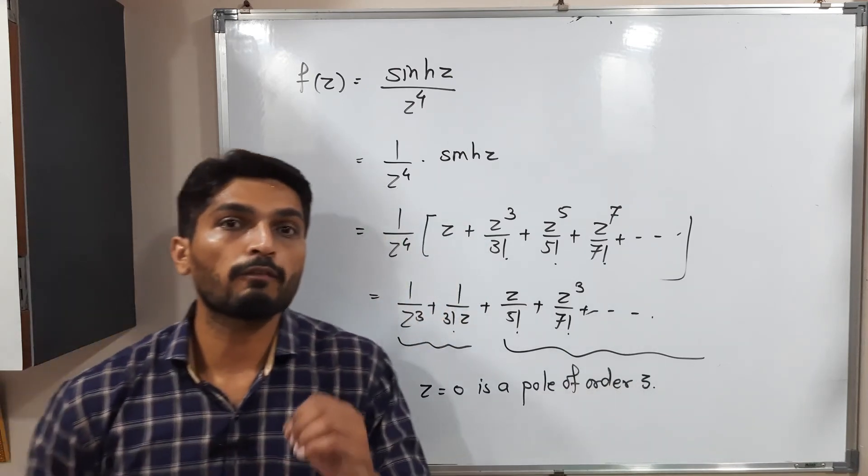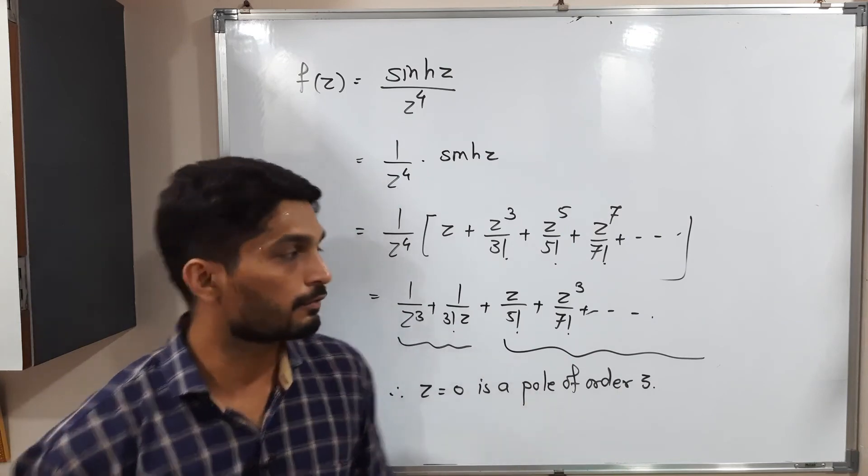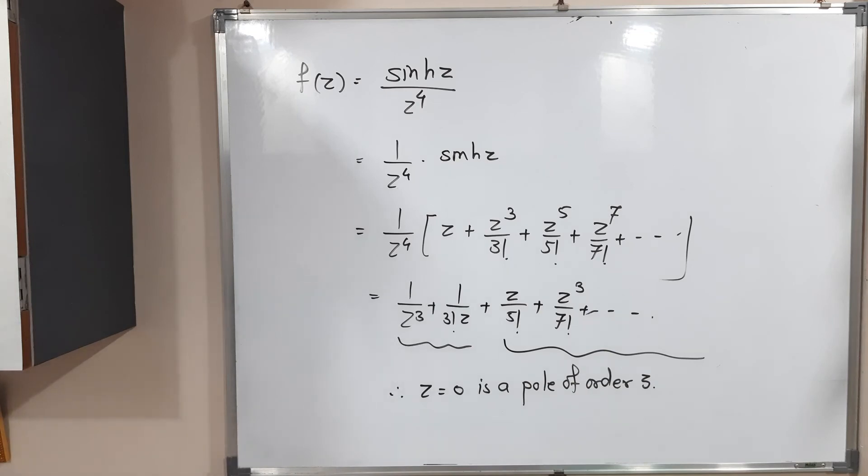Therefore, we can declare z equals zero is a pole of order three. So in this way, with the help of Laurent series, we can find the pole of order M. If you have any singularities, we can find its order. Make a screenshot of it. After that, we will stop. Thank you.